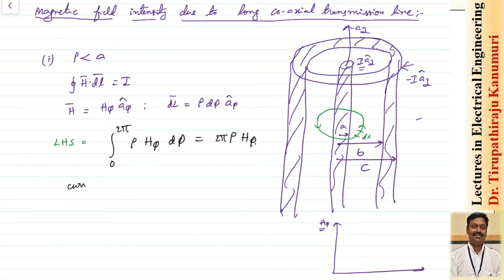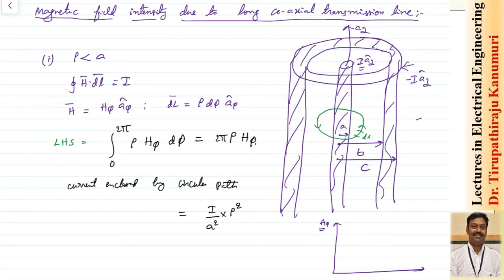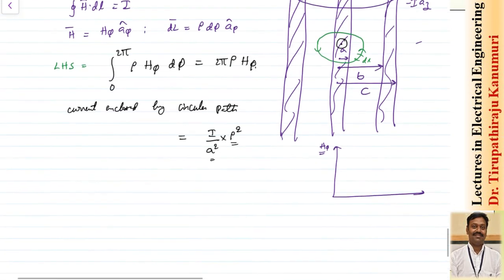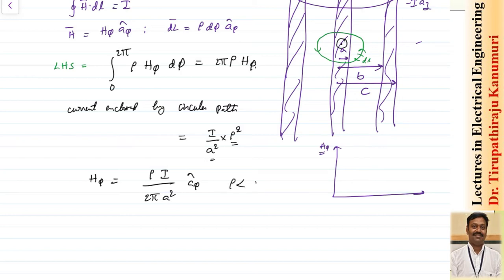For the current enclosed: since we are using only a portion of the total cross-sectional area, the current per unit area is I divided by πA². Multiplying by the enclosed area πρ² gives I ρ²/A². Equating left and right sides, H_φ = ρI / (2π A²) in the direction of A_φ, for ρ less than A.